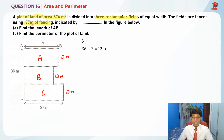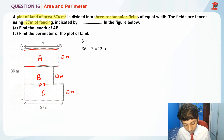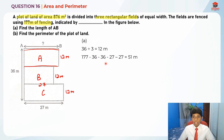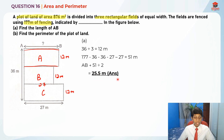We take 177 minus 36 minus another 36 minus 27 minus another 27, which gives us 2 times AB. So: 177 − 36 − 36 − 27 − 27 = 51 meters. This length plus this length is 51 meters, so AB × 2 = 51. Therefore AB = 51 ÷ 2 = 25.5 meters. That is the answer for Part A.